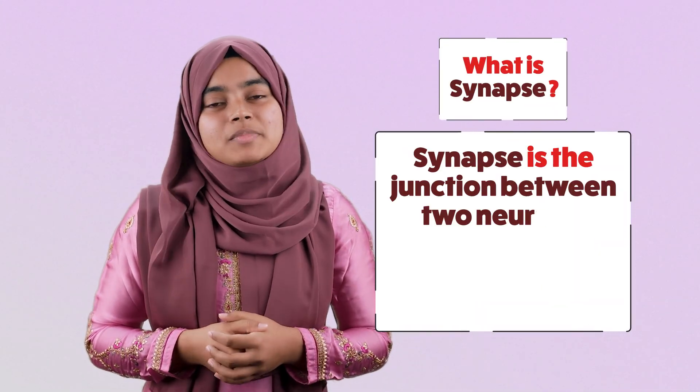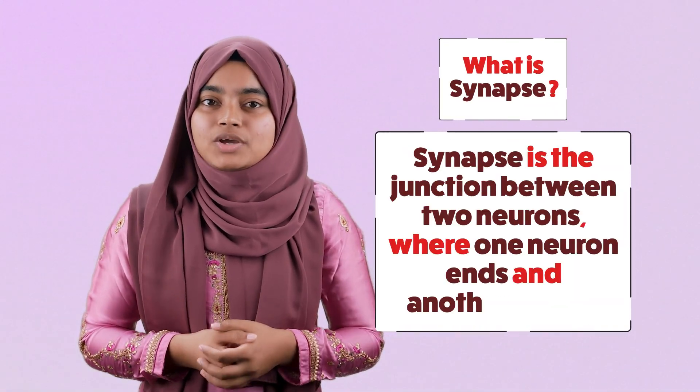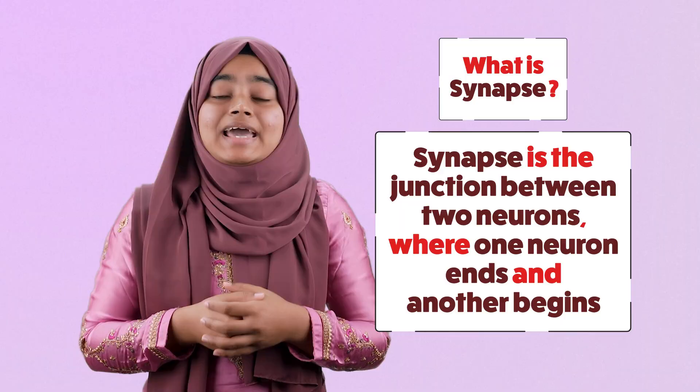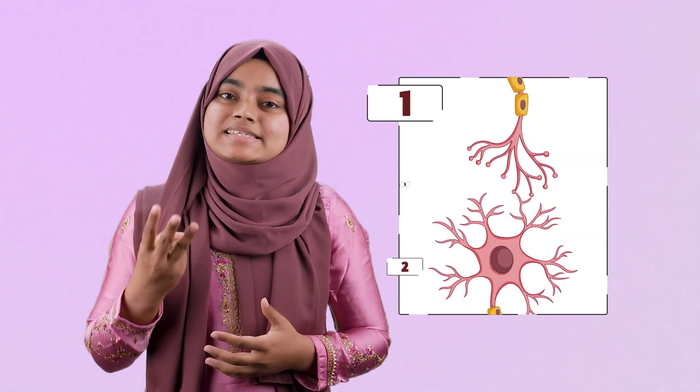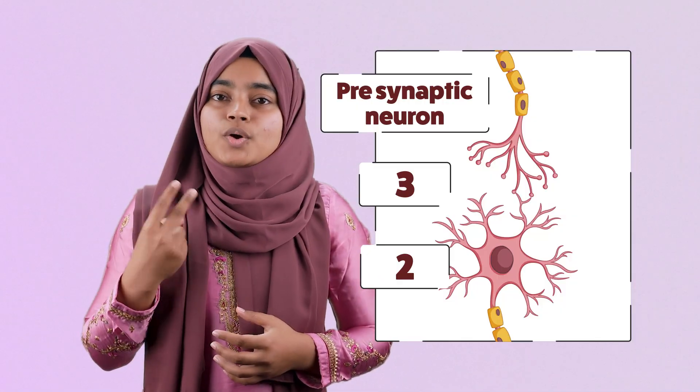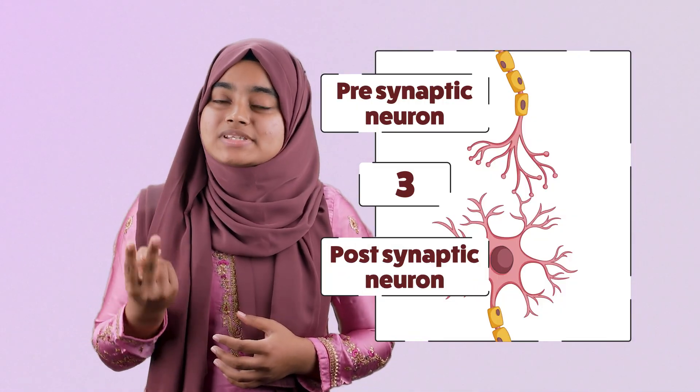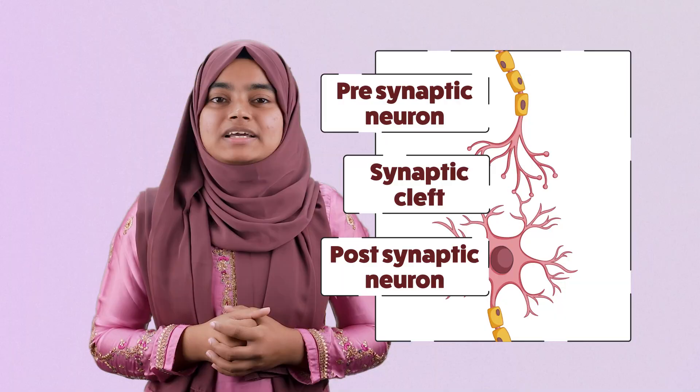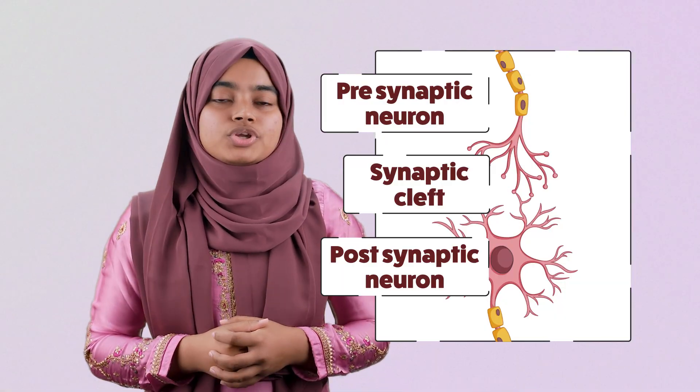For impulse transmission, our main goal is to transmit this action potential through the synapse to the post-synaptic neuron. A synapse is the junction between two neurons where one neuron ends and another begins. It has three components: the pre-synaptic neuron that sends the impulse, the post-synaptic neuron that receives the impulse, and the synaptic cleft — the gap between the two neurons.